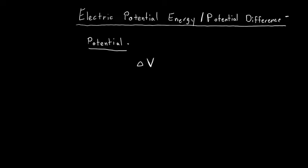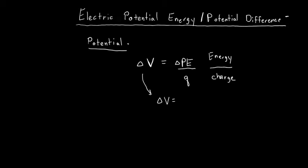Change in V is equal to the change in electrical potential energy all divided by charge. So electric potential is the energy you get out per unit charge. Delta stands for a difference, so delta V is equal to the potential — the energy per charge — at some point B, minus the potential at some other point A. This is the change in potential to move a charge between two points.